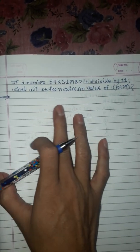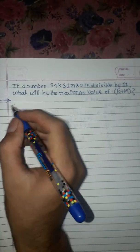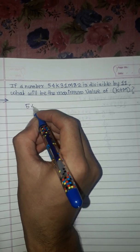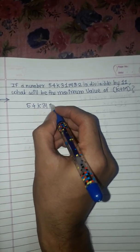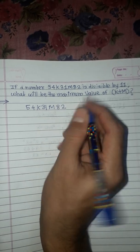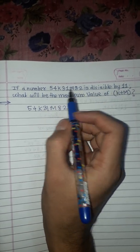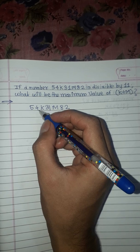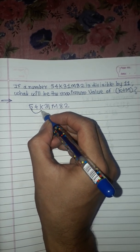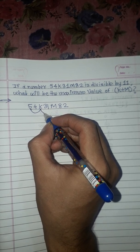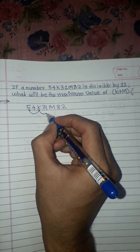Hello my dear friends, today we will solve this question: if the number 54k31m82 is divisible by 11, what will be the maximum value of k+m? The divisibility rule of 11 says that the sum of numbers at odd places minus the sum of numbers at even places must equal 0 or a multiple of 11.